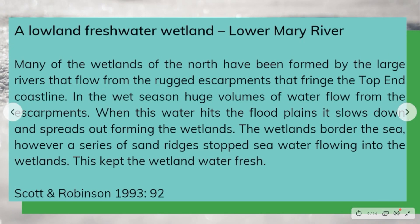Now let's see the example in the following text: 'A Lowland Freshwater Wetland — Lower Mary River.' Many of the wetlands of the north have been formed by the large rivers that flow from the rugged escarpments that fringe the top-end coastline. In the wet season, huge volumes of water flow from the escarpments. When this water hits the floodplains, it slows down and spreads out, forming the wetlands. The wetlands border the sea; however, a series of sand ridges stopped sea water from flowing into the wetlands. This kept the wetland water fresh.